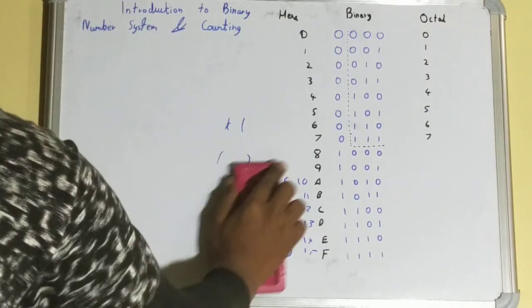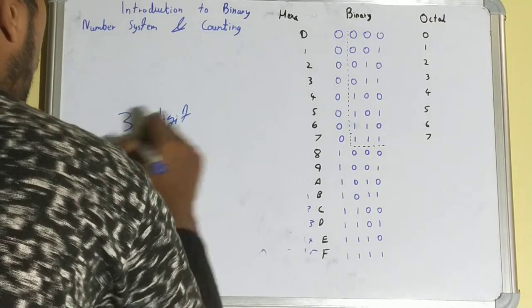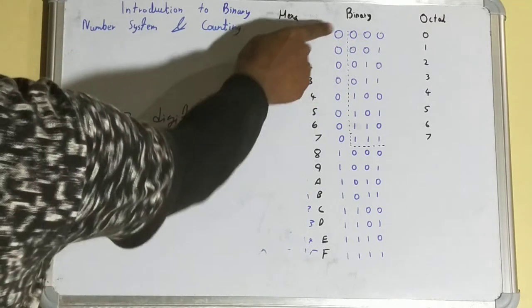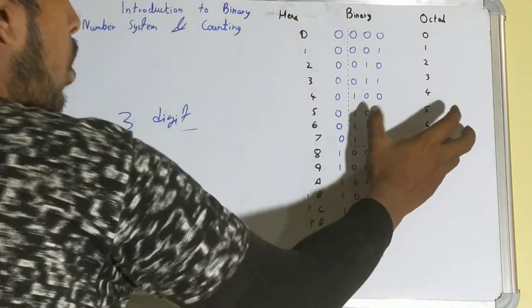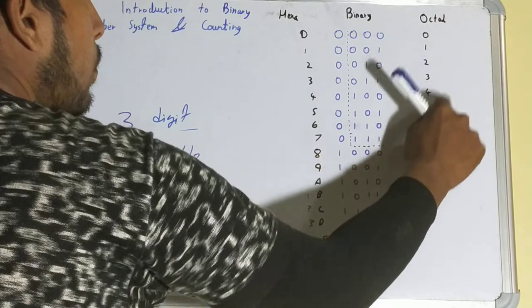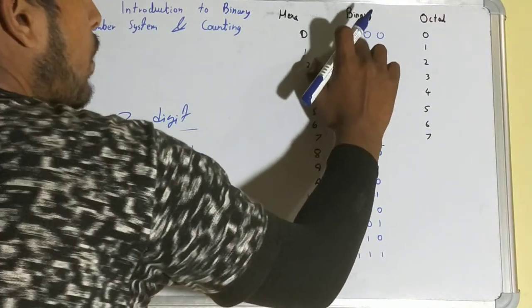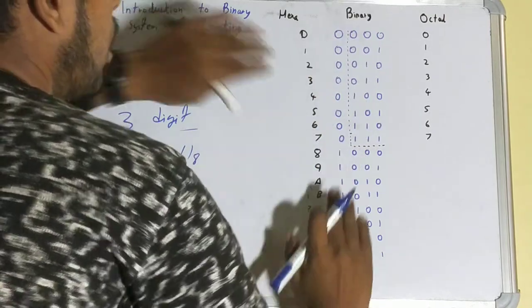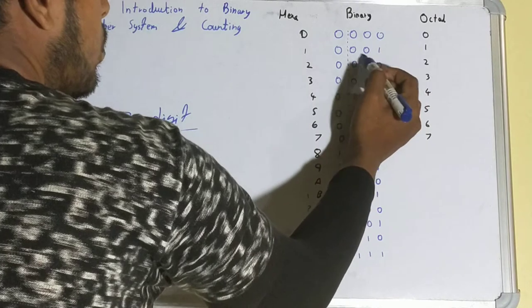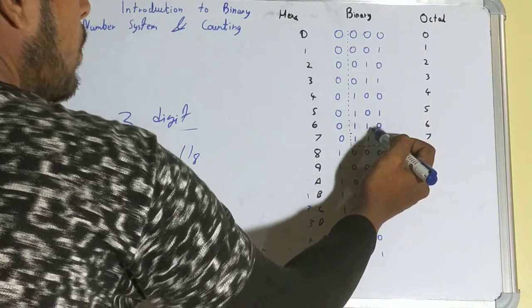For octal, the representation is different — octal uses three-digit binary (not four). So hexadecimal is a four-digit representation, while octal is a three-digit representation. Octal has only eight numbers (0–7), which is why we use base 8. The binary equivalents for octal are: 0 = 000, 1 = 001, 2 = 010, 3 = 011, 4 = 100, 5 = 101, 6 = 110, 7 = 111.